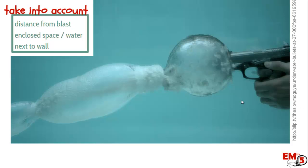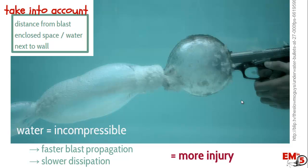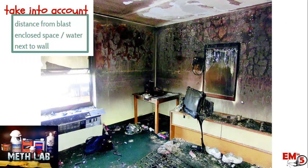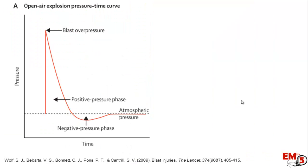Next you have to think about what your surroundings are. Take, for example, an underwater blast — do you think you'd have more or less injury from that? You're actually going to have more injury. That's because water is incompressible; you're going to have a faster blast propagation and also a slower dissipation of that energy. What about if you're in an enclosed space, like inside a room? You're going to have more injury again.